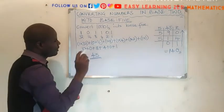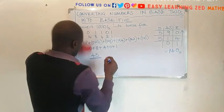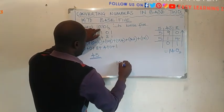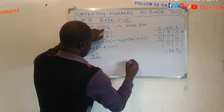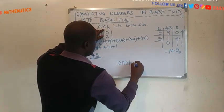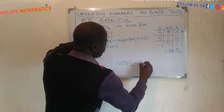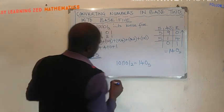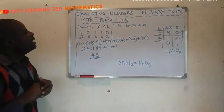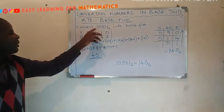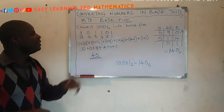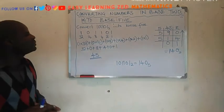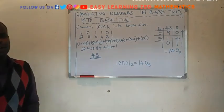Now, what does it mean? This means that 101101 base 2 is equal to 140 base 5. So we have successfully converted 101101 in base 2 into base 5. So this is how we convert numbers in base 2 into base 5. Thank you so much for watching.